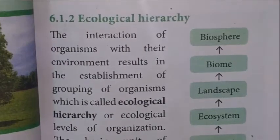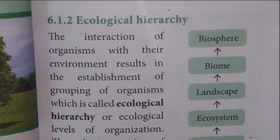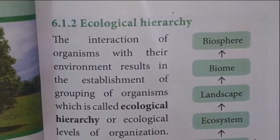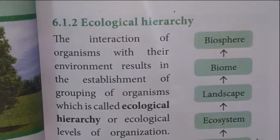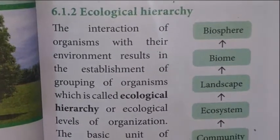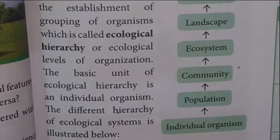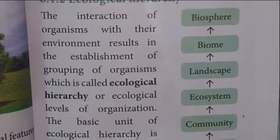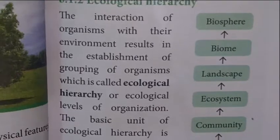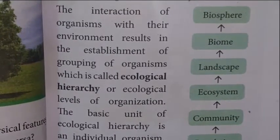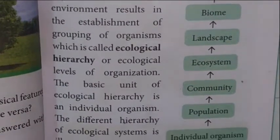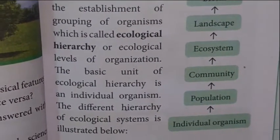The ecological hierarchy deals with individual organisms, population, a group of populations making a community, ecosystem, landscape, biome, and biosphere. The interaction of organisms with the environment results in the establishment of groupings of organisms, which is called the ecological hierarchy or ecological levels of organization.